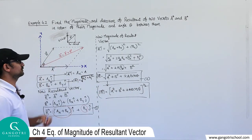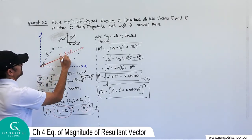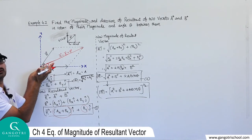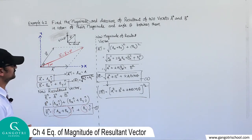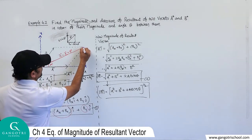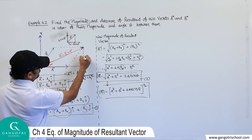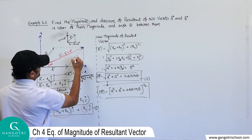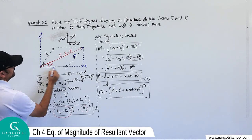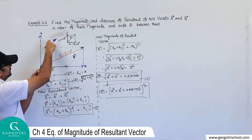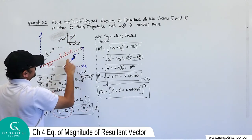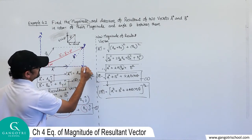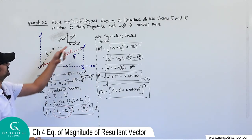Now we would like to find the direction of the resultant vector. Suppose the resultant vector makes an angle alpha with the x-axis. From the head of the resultant vector, draw a perpendicular line. We consider the triangle OPQ formed by the vectors. This angle alpha represents the direction of the resultant vector.